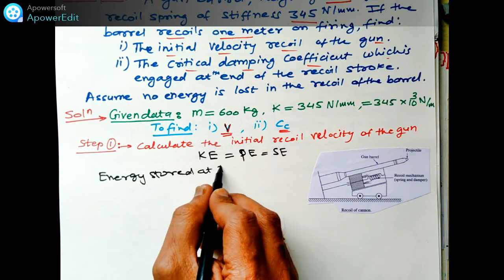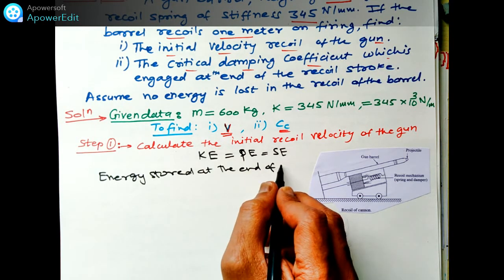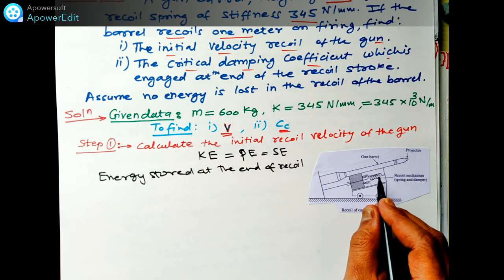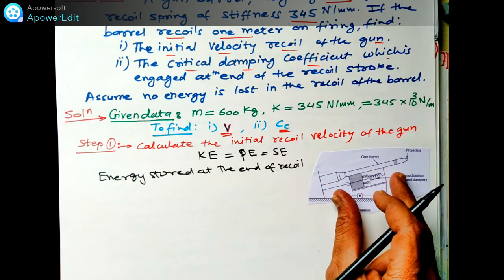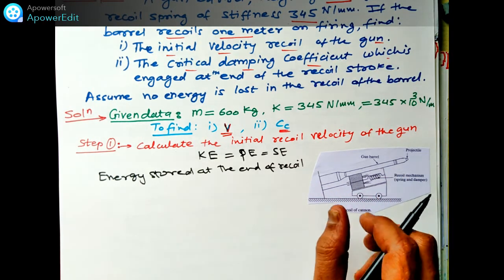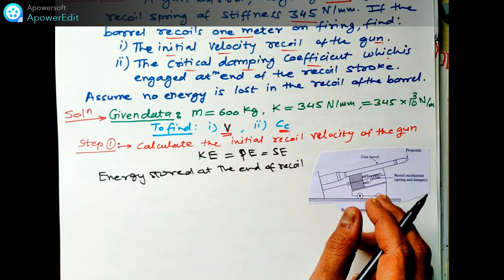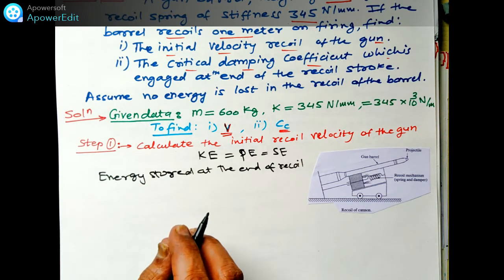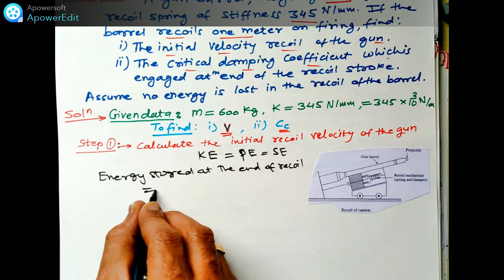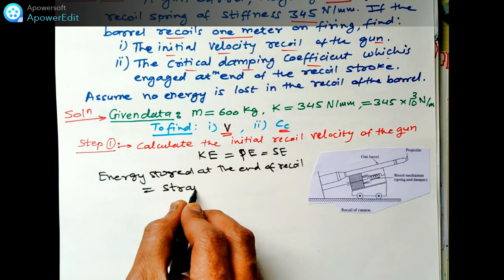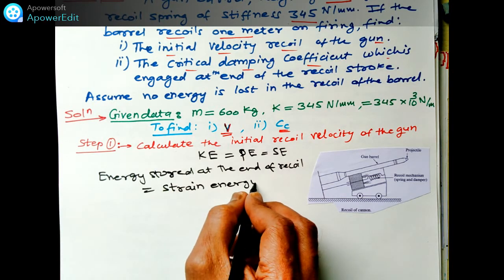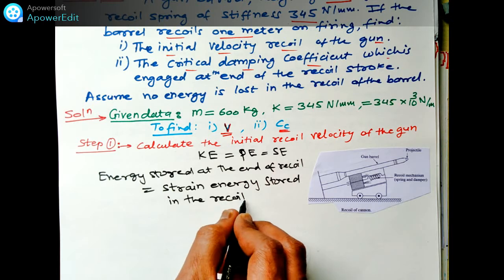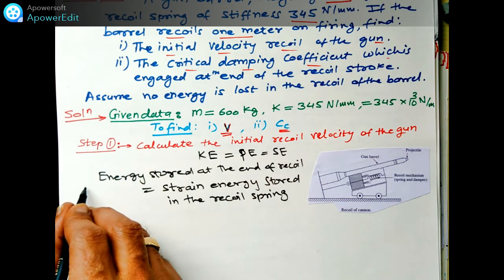The energy stored at the end of the recoil — see this is the picture of the barrel on which the recoil arrangement is there, with the spring and damper. It will deflect or stretch by some deflection of the barrel. What will happen is it will store energy. The energy stored at the end of this recoil will be equal to the strain energy stored in the recoil spring.